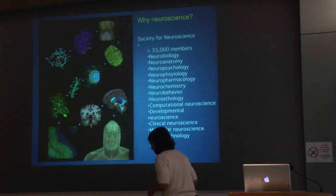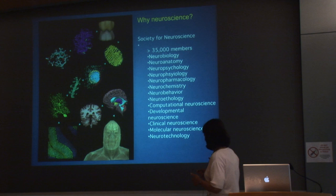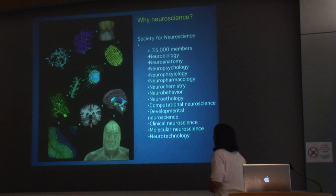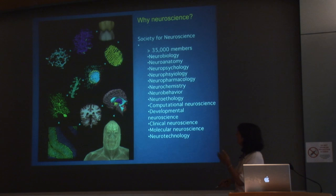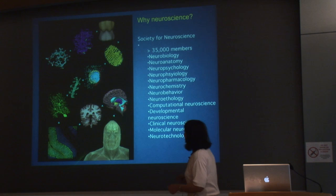Why is it that neuroscience found this problem to be particularly difficult? I like to use this picture, which we created back in 1998, to illustrate the different ways we image the nervous system. If we look at the Society for Neuroscience, which is the major organization hosting neuroscientists, there are about 35,000 different members spanning all different disciplines: neurobiology, anatomy, psychology, physiology, pharmacology, chemistry, behavior, computational science, clinical science. It's a very diverse group.